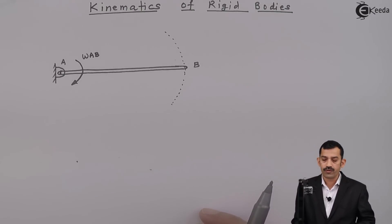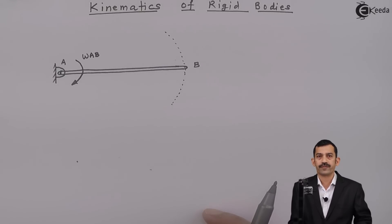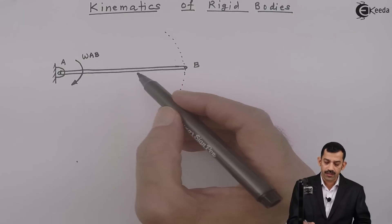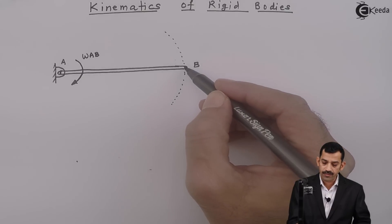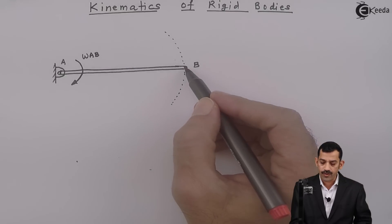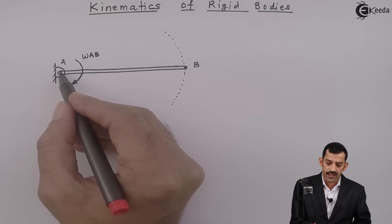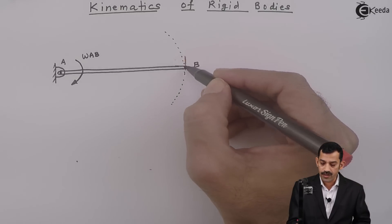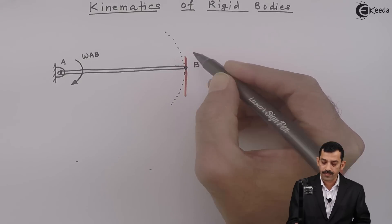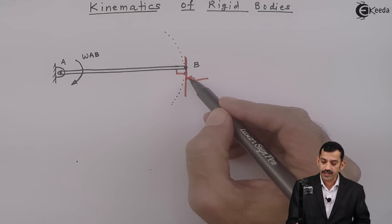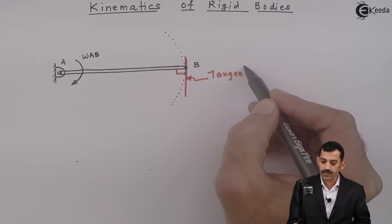In curvilinear motion, the linear velocity of any point is always tangent to the path. As point B lies on this path and the bar rotates in clockwise direction, at this point it will represent the tangent — the line which just touches the curve. At point B, if we draw the tangent, it means perpendicular to AB. Because at point B, if we join it to point A, which is the center of the circle, AB represents the normal. That means here the tangent means perpendicular to AB, giving us a vertical line.